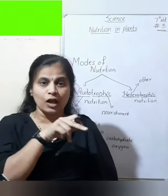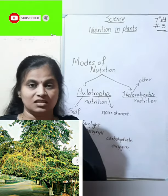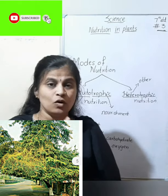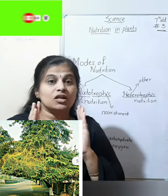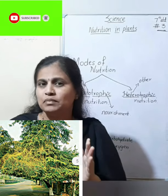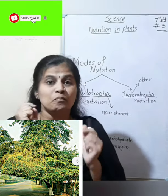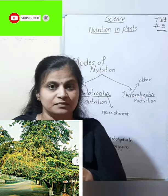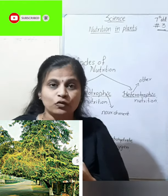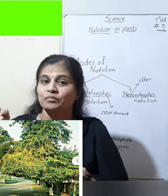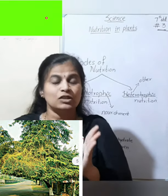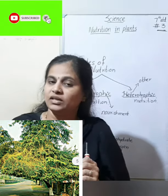Can you see the yellow colored wiry structure over the branch and stem of this tree? This yellow wiry structure is climbing the plant — it is the Cuscuta plant. Cuscuta, also called Amarbel, cannot prepare its own food. It completely derives its nutrition from the plant on which it is climbing. The plant on which it climbs is called the host, and Cuscuta is called the parasite.